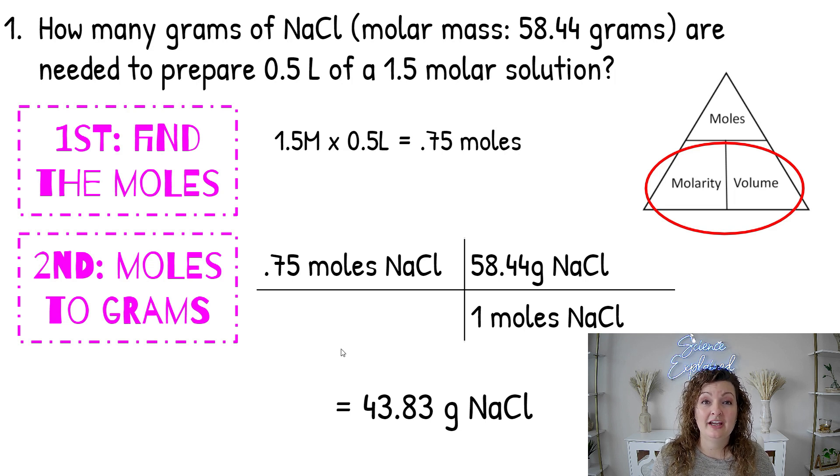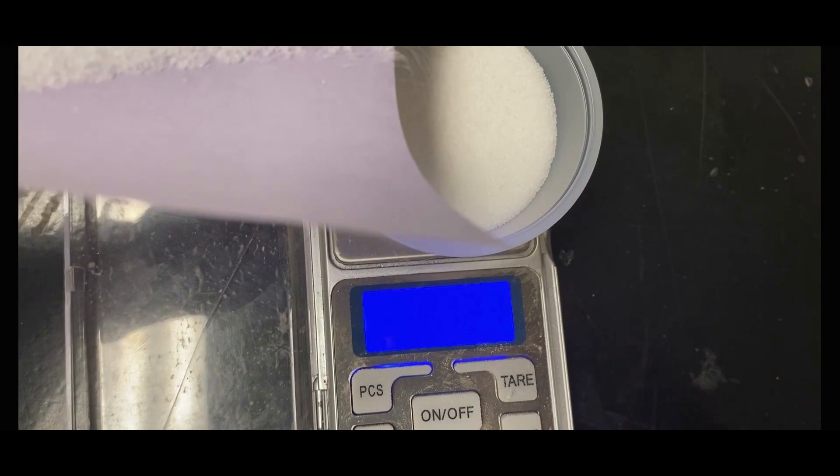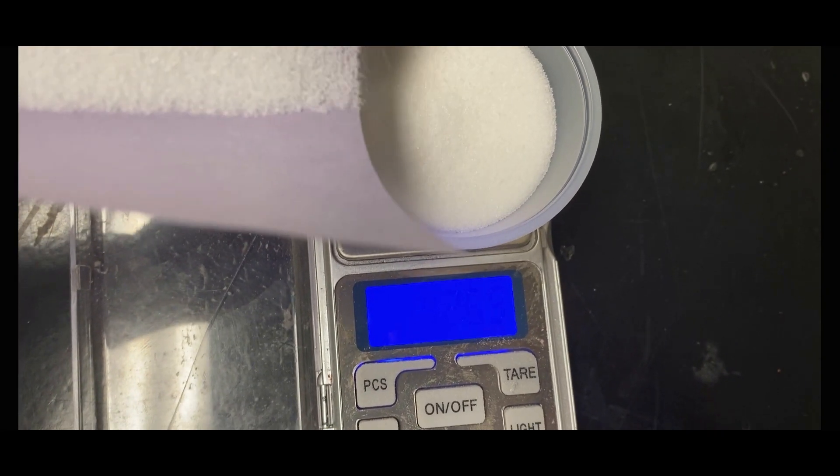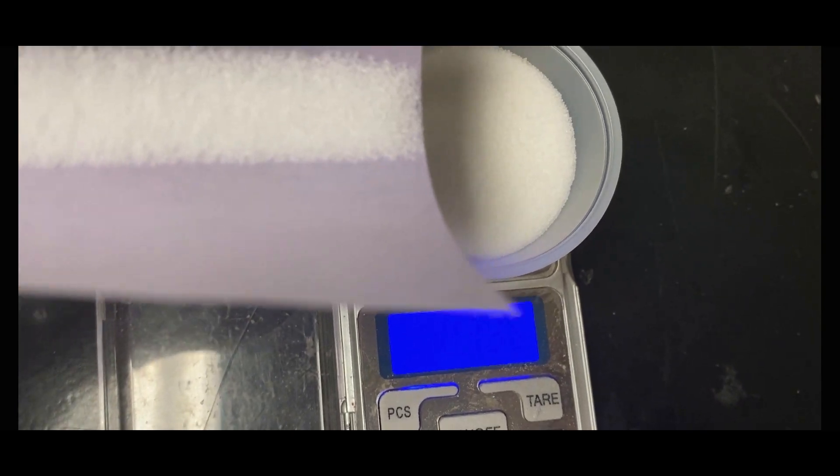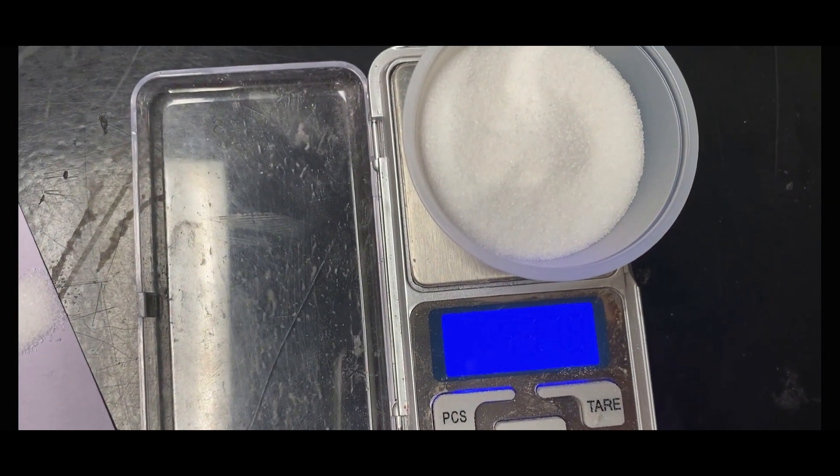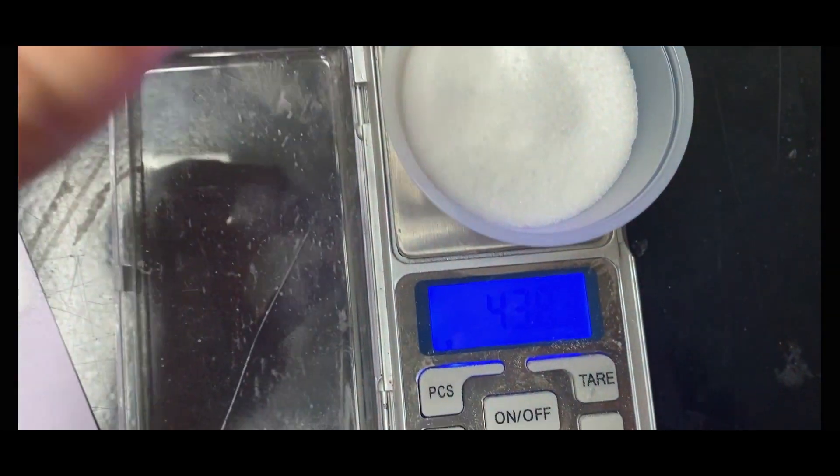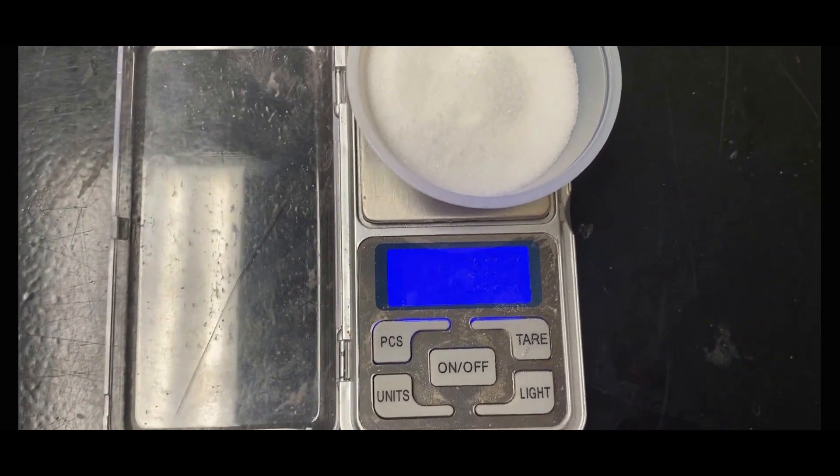Here's what this looks like in real life. Okay, so here we go, we're going to measure out that 43.83 grams of our NaCl, which is just sodium chloride or regular table salt, and you can see that I'm trying to make it as exact as possible. It's hard to see those numbers on the electronic scale, but it is exact.